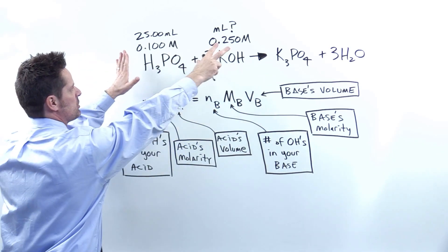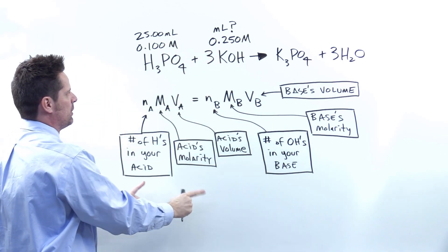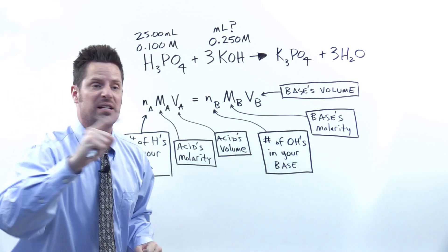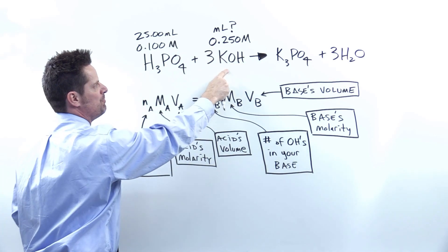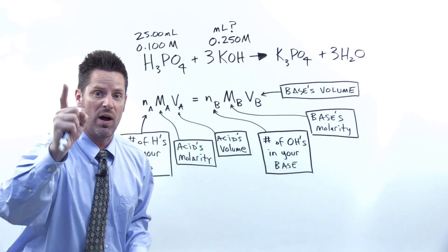So what we're going to do is take these numbers right up here and insert them in their respective locations and solve for the missing variable, that is the milliliters of base. In other words, the Vb, that's the one thing we don't know.